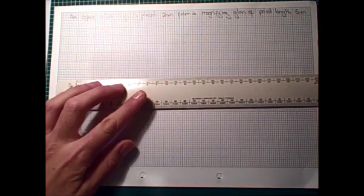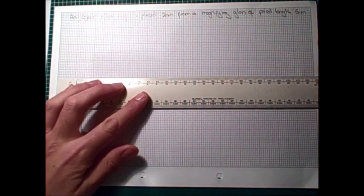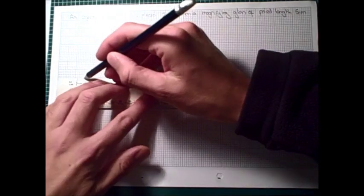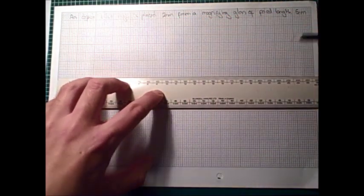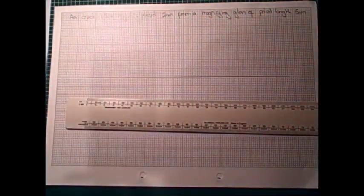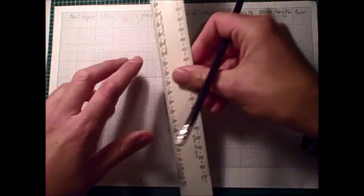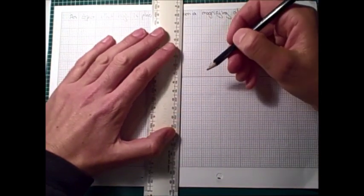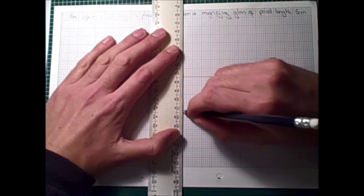So, the start is much the same as before. First job is to draw in the principal axis. Nice thick straight line. And again, we'll put the lens roughly in the middle of the page to give ourselves plenty of space to work.